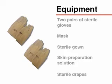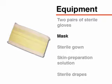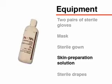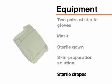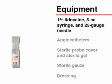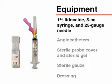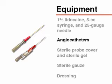After obtaining the patient's consent for the procedure, gather the necessary equipment. You will need two pairs of sterile gloves, a mask, a sterile gown, a skin preparation solution such as chlorhexidine, sterile drapes, 1% lidocaine without epinephrine, a 5cc syringe and a 25-gauge needle for delivery of the local anesthetic, and angiocatheters. Radial arterial catheterization can be performed with standard angiocatheters or with safety angiocatheters. Use the equipment that complies with the safety practices at your institution.